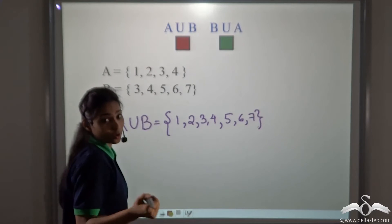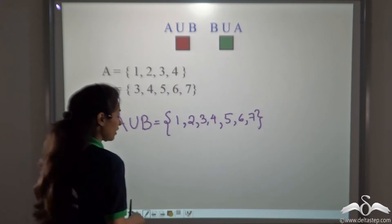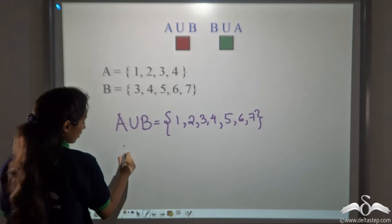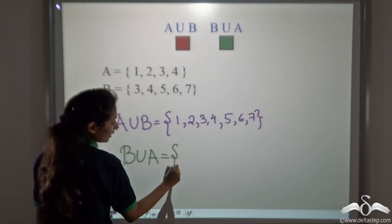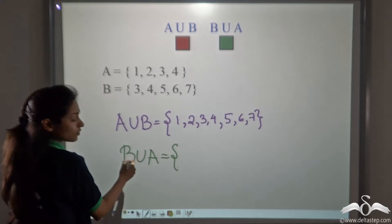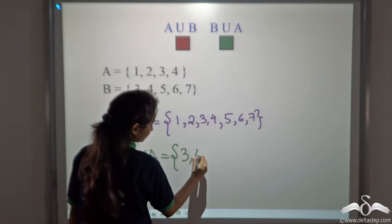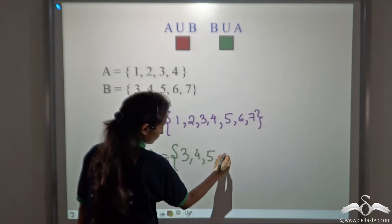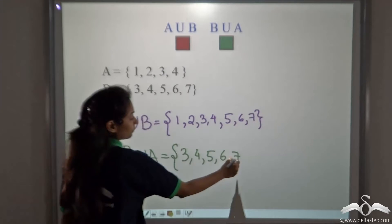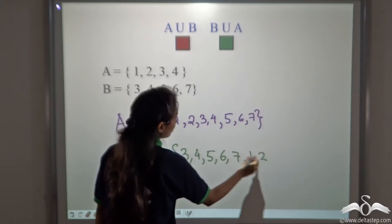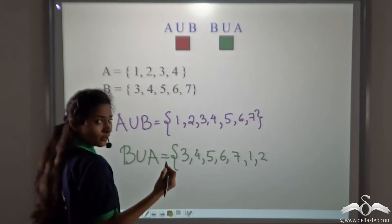Now the question was: will B union A give me the same answer? Let's check. B union A — I will list the elements of set B first: 3, 4, 5, 6 and 7. And then I will list the elements of set A: 1, 2 — and 3 and 4 have already been listed, so we will not write them again.